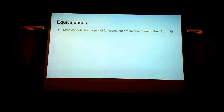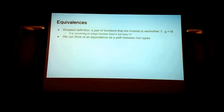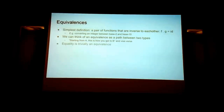Equivalences: the simplest definition is a pair of functions which are inverse to each other, where they compose to be equal to the identity. For example, converting an integer between base 2 and base 10 — that's a perfect example. We can think of equivalence as a path between two types: starting from A, this is how you get to B, and vice versa.